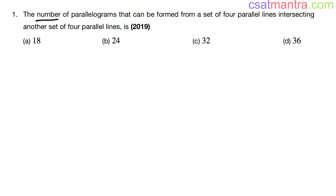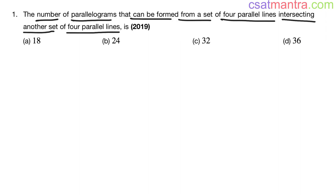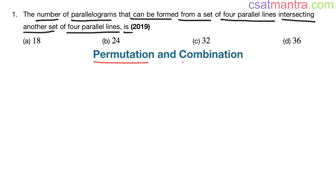The number of parallelograms that can be formed from a set of four parallel lines intersecting another set of four parallel lines is — this question is from the permutation and combination chapter, asked in 2019.